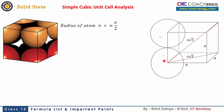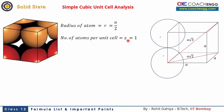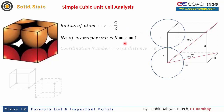Each corner atom contributes only 1/8th part to the unit cell. The cube's side is 'a' and the atom's radius r is a/2, which is also known as the lattice parameter. Here the number of atoms per unit cell is 1 — because each corner has 1/8 atom contributing, and there are 8 corners, so total atoms per unit cell = 1.